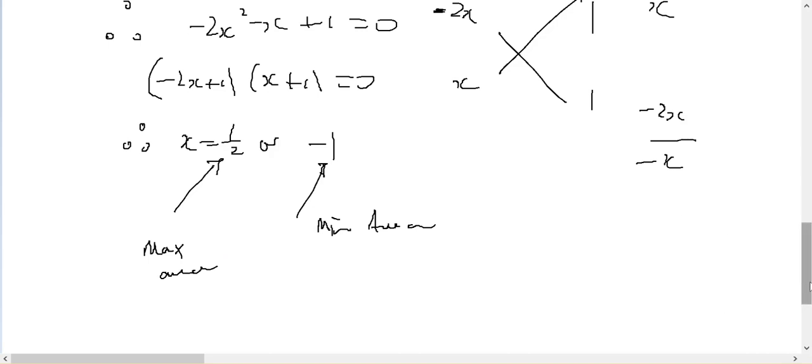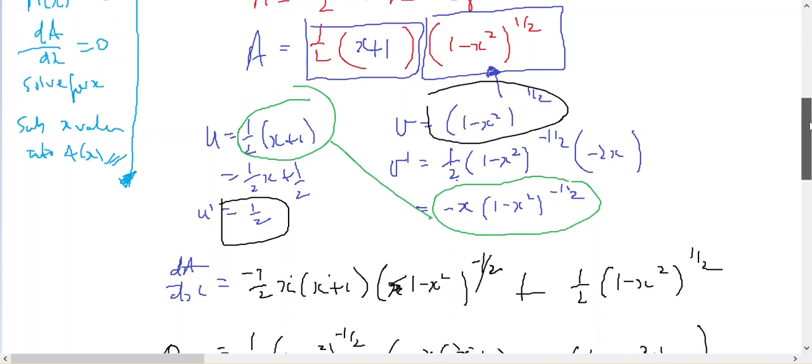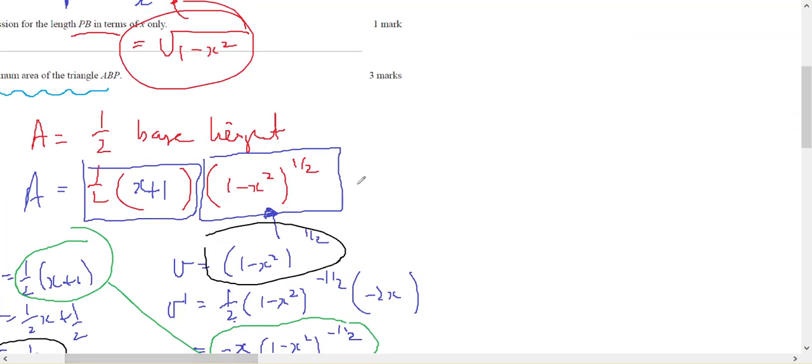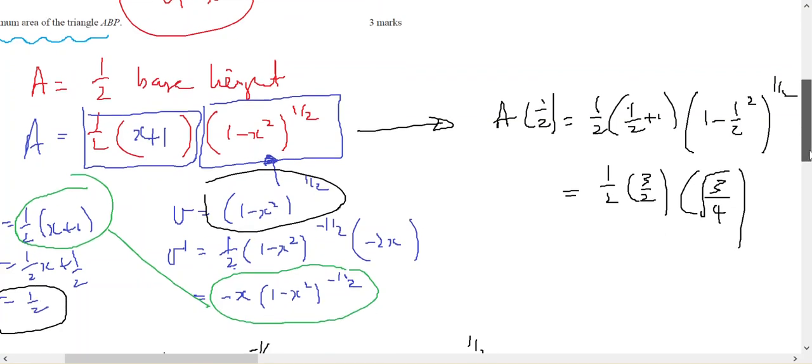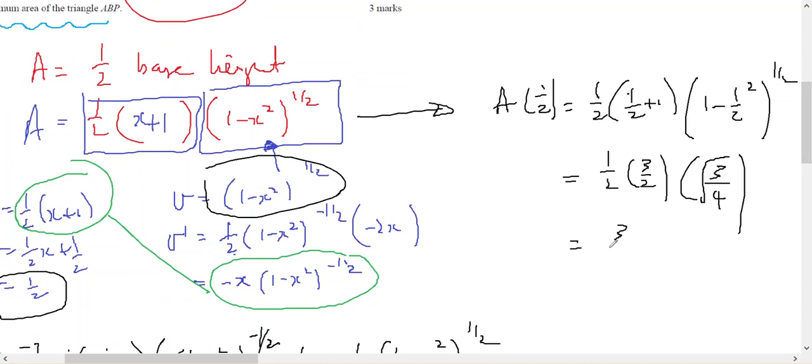The question's asking for the actual area. So if I come back up here to an expression for the area, Area when x equals 1 half is going to be 1 half, 1 half plus 1, and 1 minus 1 half squared, square root. So I've got a half, 3 on 2. 1 minus 1 quarter is 3 quarters, square root. Which gives me 3 on 4 times root 3 on 2, which is 3 root 3 on 8 square units is my maximum area.